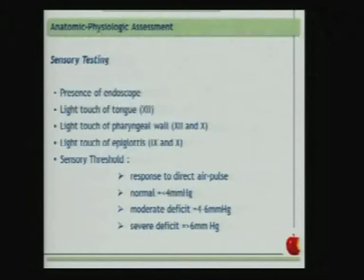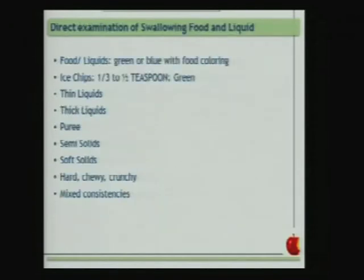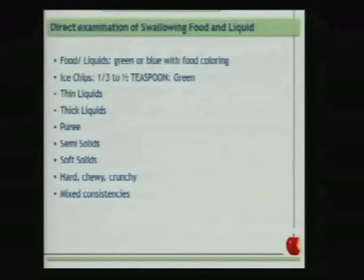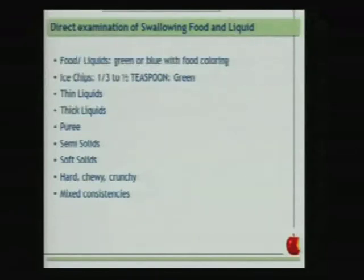Sensory testing can also be done with the endoscope using a light touch of the tongue, pharyngeal wall, and epiglottis, and testing the response to a direct air pulse in the larynx. For direct examination of swallowing food and liquids with the endoscope, we dye the food and liquids green or blue with food coloring. We start the protocol with ice chips — one-third or one-half of a teaspoon — when the patient has not been swallowing for a period of time, as ice is very cold, allowing the patient time to prepare the swallowing and pharyngeal phase. If aspiration occurs, it is a very thin liquid not expected to be harmful for the lungs with only one trial.